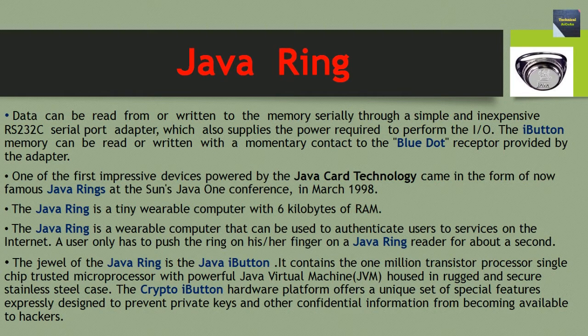The Java Ring is a tiny wearable computer with 6 kilobytes of RAM. It is a wearable computer that can be used to authenticate users to services on the internet. The user only has to push the ring on his or her finger on a Java Ring reader for about a second. The Crypto iButton hardware platform offers a unique set of special features expressly designed to prevent private keys and other confidential information from becoming available to hackers.